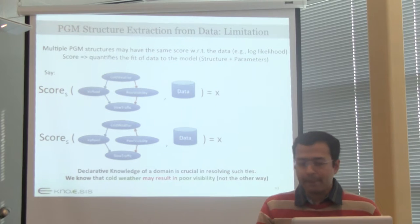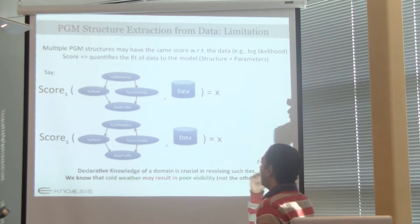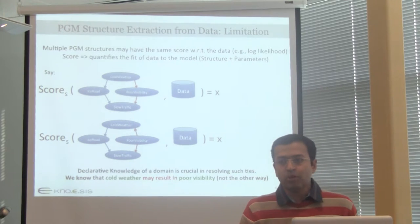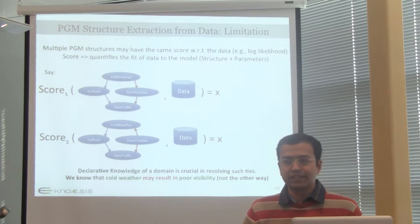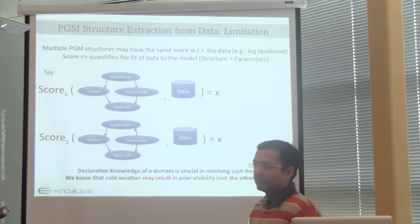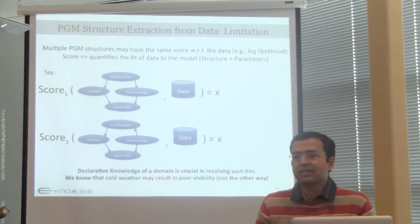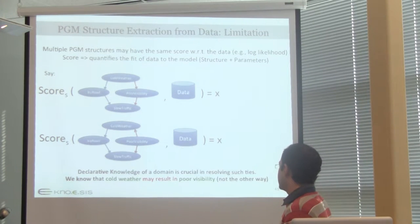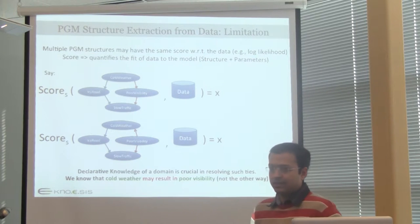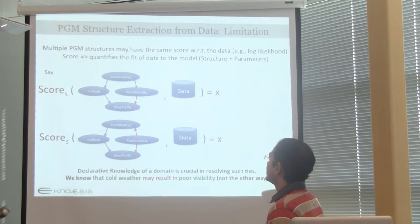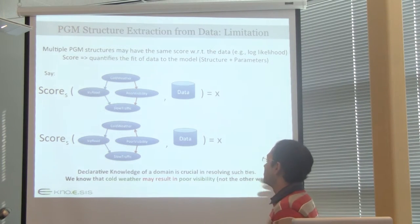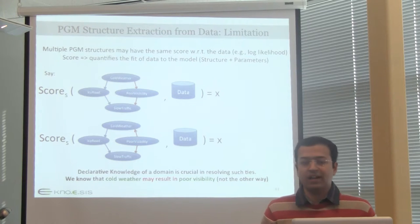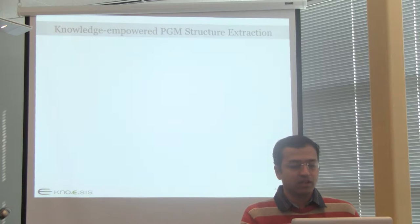There are many structure extraction techniques in the Bayesian network formalism. However, a major drawback is that if you have two possible structures of a domain, both might be equally likely. Two different structures can result in the same score according to information-theoretic measures. We hypothesize that declarative knowledge is very useful in such contexts — for example, ConceptNet might tell you that cold weather influences poor visibility rather than the reverse, helping to direct the arcs correctly. This resolves complexities within the network.